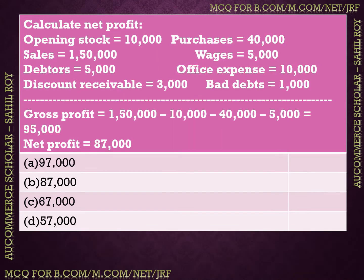The next question is: calculate net profit. In this question, the given data is — opening stock: Rs. 10,000; purchases: Rs. 40,000; sales: Rs. 1,50,000; wages: Rs. 5,000; debtors: Rs. 5,000; office expense: Rs. 10,000; discount receivable: Rs. 3,000; and bad debt: Rs. 10,000.